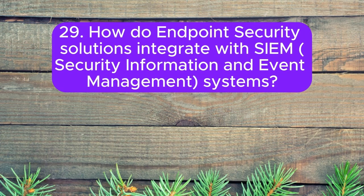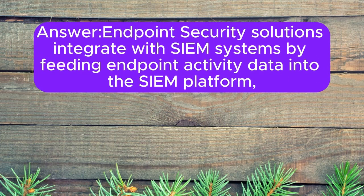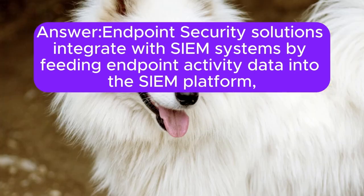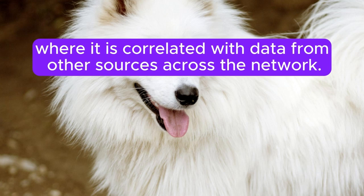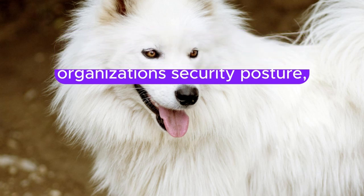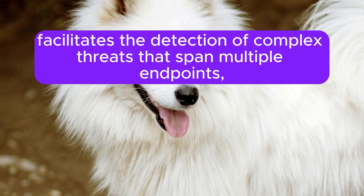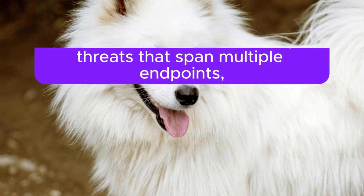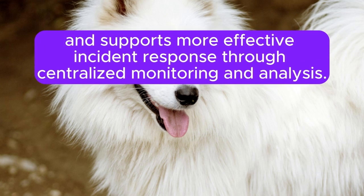Question 29: How do endpoint security solutions integrate with SIEM (security information and event management) systems? Endpoint security solutions integrate with SIEM systems by feeding endpoint activity data into the SIEM platform, where it is correlated with data from other sources across the network. This integration enables a comprehensive view of the organization's security posture, facilitates the detection of complex threats spanning multiple endpoints, and supports more effective incident response through centralized monitoring and analysis.